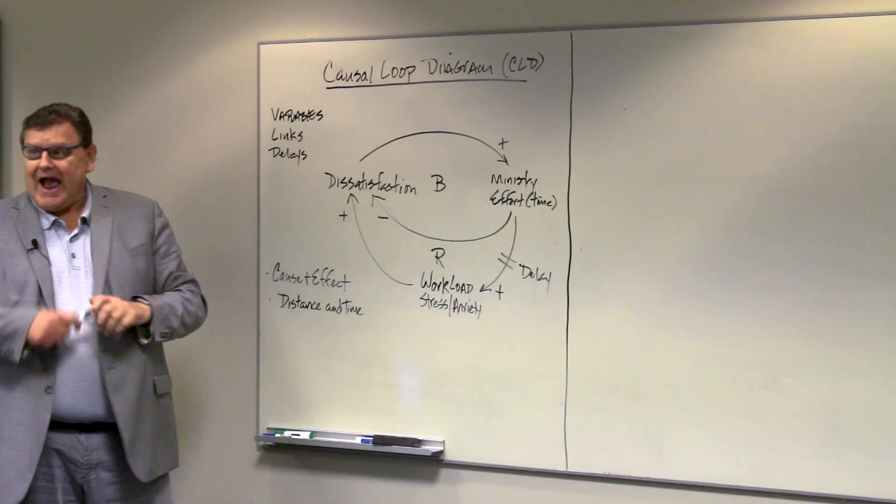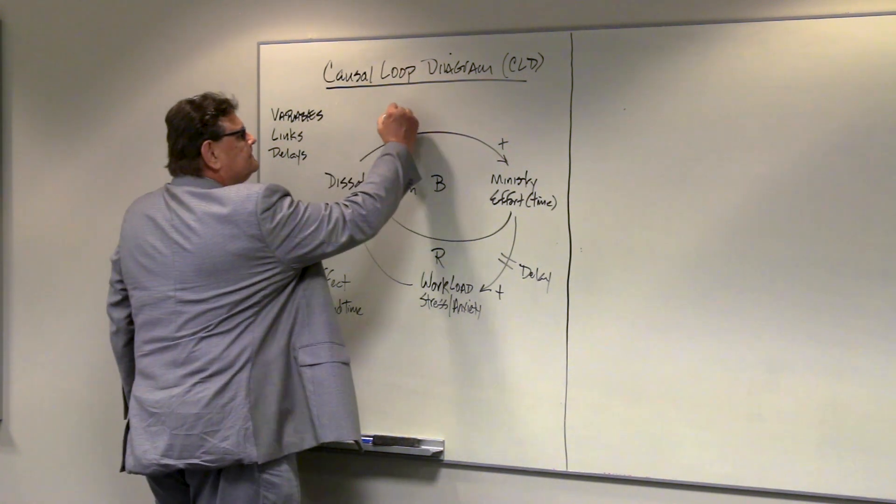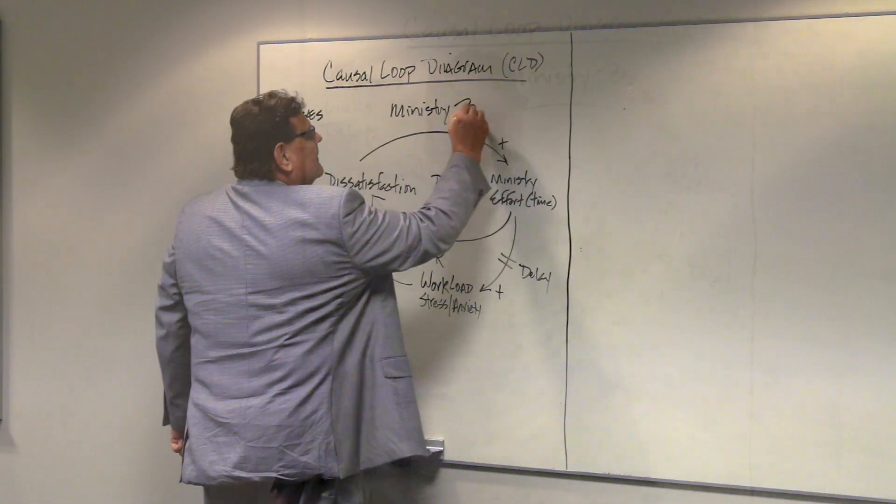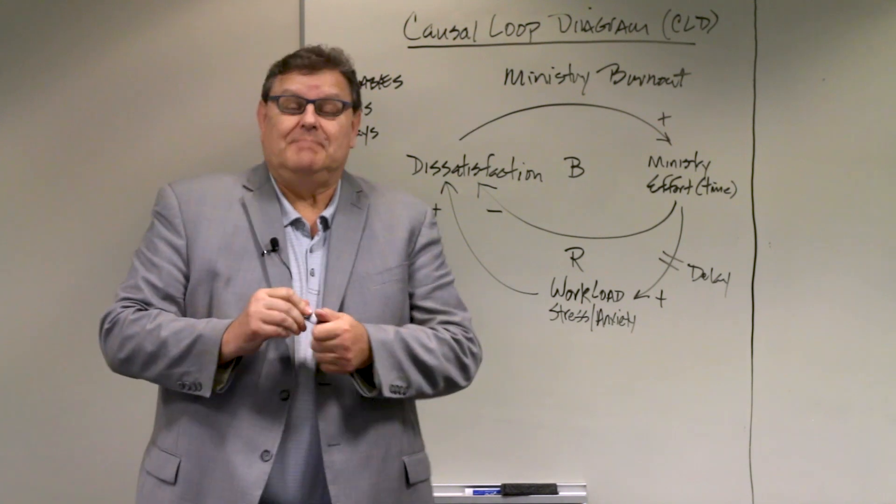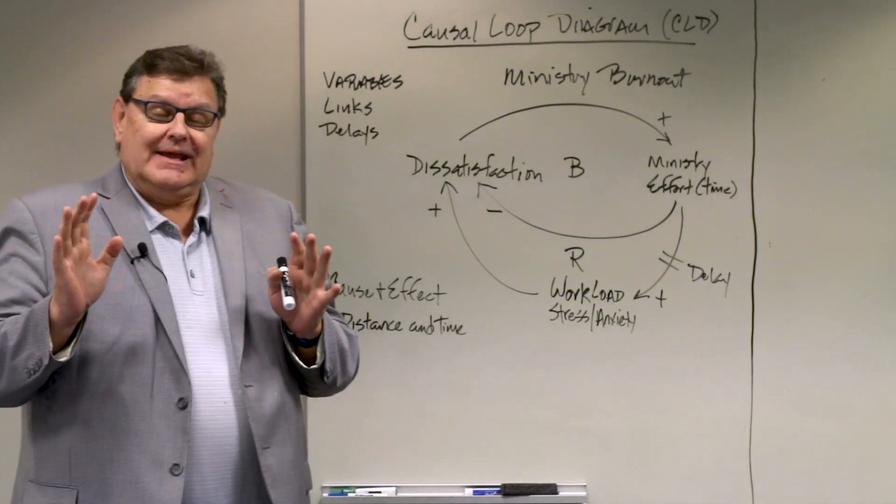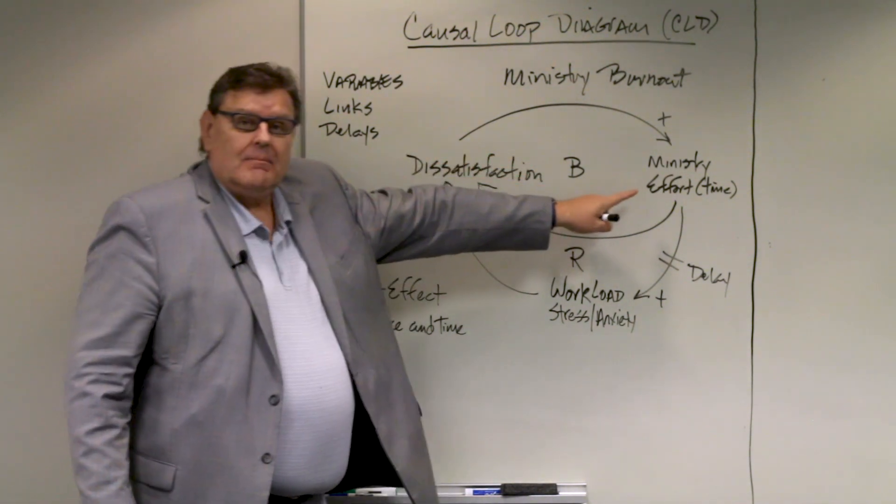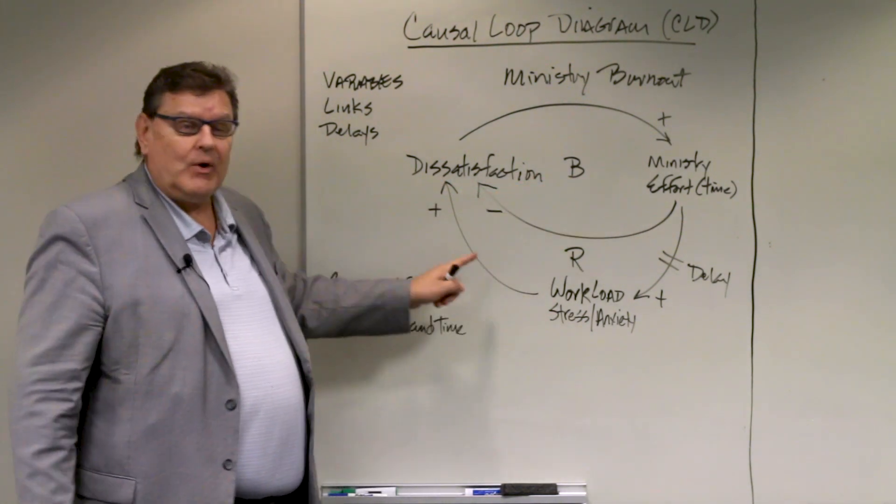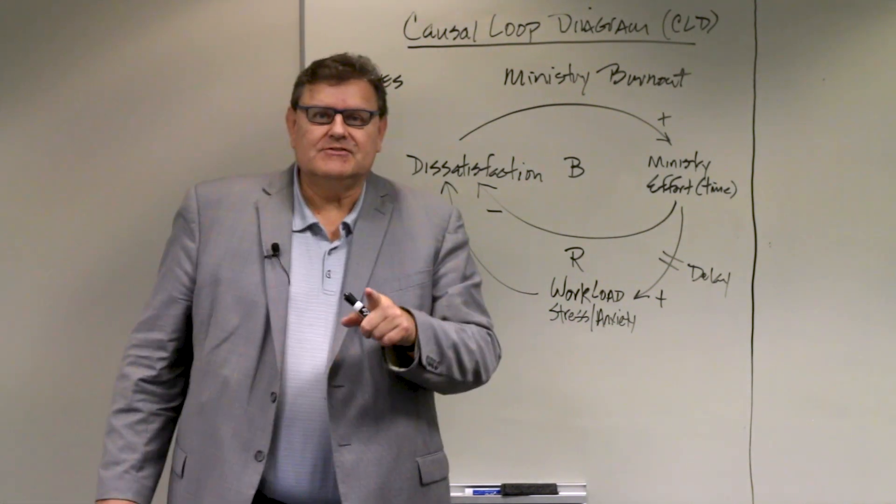So what we have here actually is the causal loop diagram for ministry burnout. This is how it happens. And what Jethro told Moses was basically, hey Moses, what you're doing is not good. And the reason it's not good is because this is what's happening. You're doing more ministry to try to meet the need. But in doing that, you're increasing stress and anxiety to the point where you're going to burn out. You can't do it. It's not good. You can't do this all on your own.